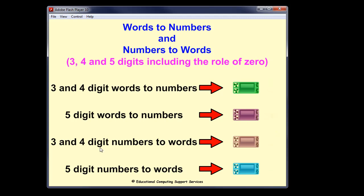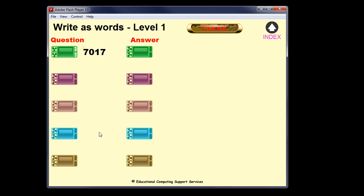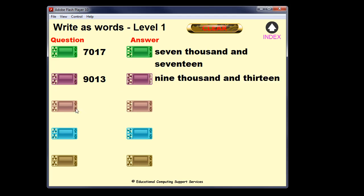We've got the reverse happening as well. So we can do 3 and 4 digits the other way. So this will generate a question and students then need to write down the answer and check it to see that they're right. So these are the 3 and the 4 digits. Let's see there's a 3 digit number, 806.